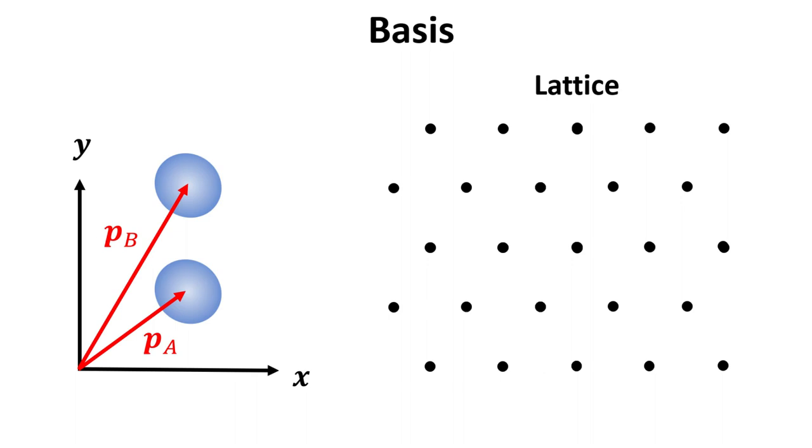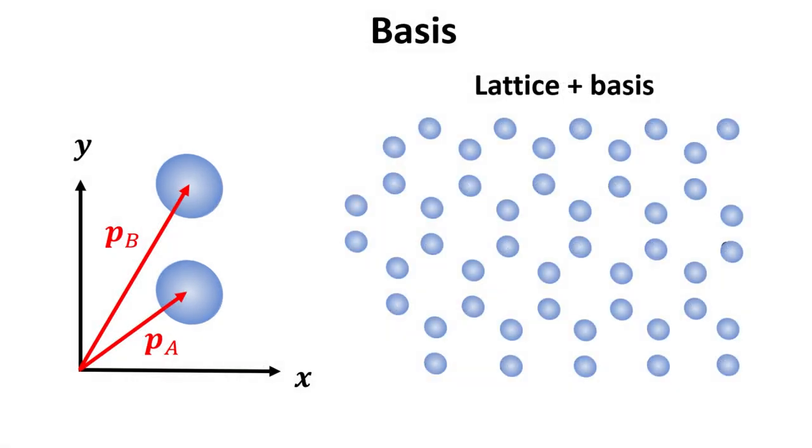As we saw earlier, the basis is the smallest repeating unit that builds up the entire crystal when attached to each point of a crystal lattice. The atoms comprising the basis of the crystal can be located in real space through the basis vectors. For instance, the basis composed of two atoms shown in the figure has basis vectors p_A and p_B. When attached to every lattice point, we obtain the full crystal structure.